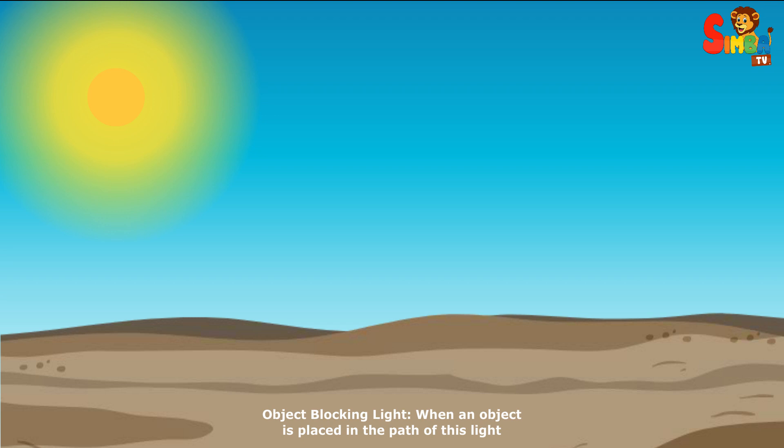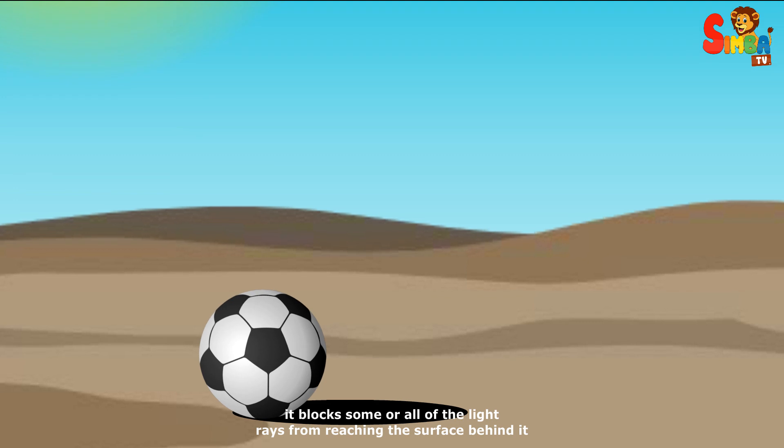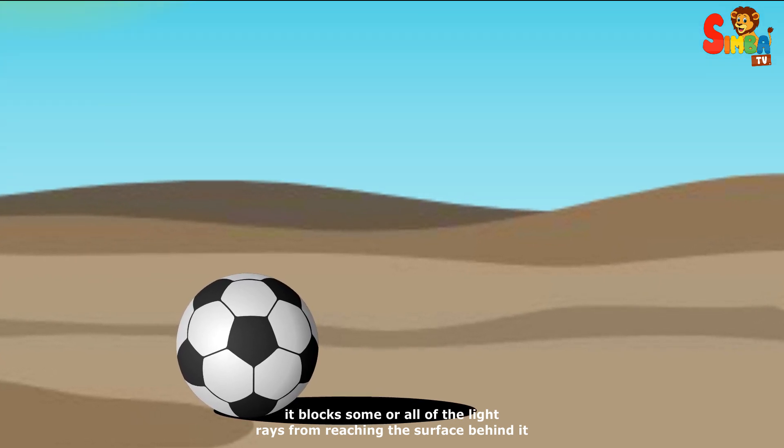Object blocking light. When an object is placed in the path of this light, it blocks some or all of the light rays from reaching the surface behind it.